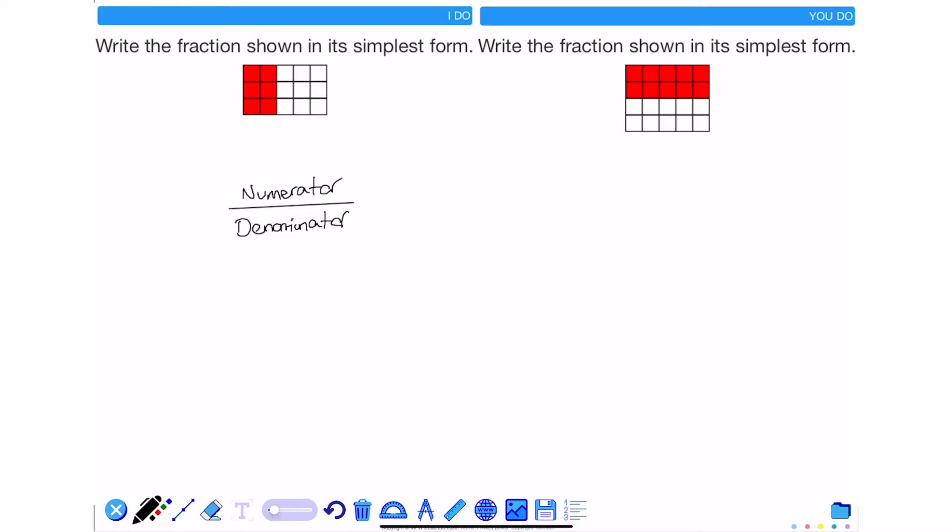So with the question on the left I can see that I've got in total a 5 by 3 rectangle. 5 squares along, 3 squares up means that there are 15 squares all together. I can also see that 6 of them are shaded in and this is what makes my fraction.